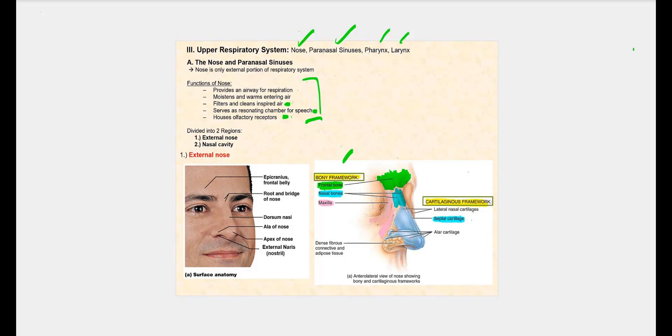Our nose is divided into two regions. The external nose is the portion we can actually see, made up of a bony framework and a cartilaginous framework. The bony framework includes the frontal bone, the nasal bones, and the maxilla, while the cartilaginous framework includes the two lateral nasal cartilages, the septal cartilage, and the alar cartilage. The type of cartilage that makes up this cartilaginous framework is hyaline cartilage.